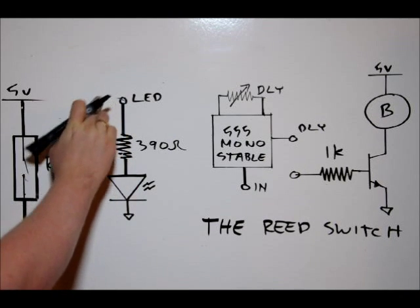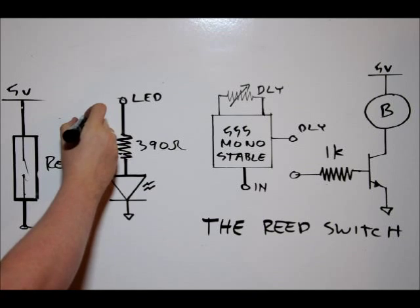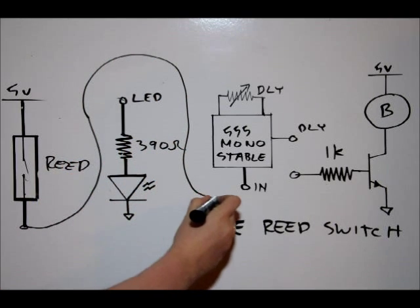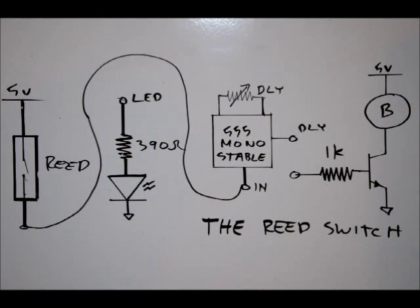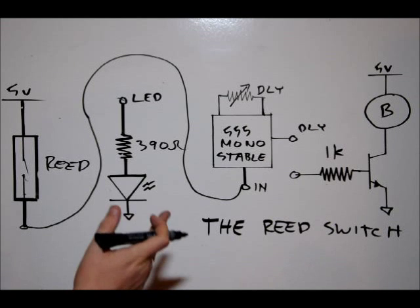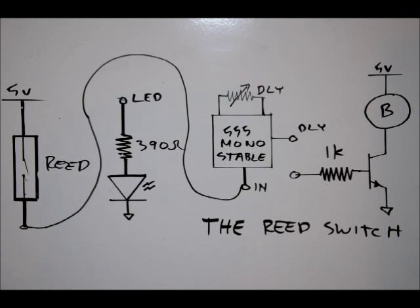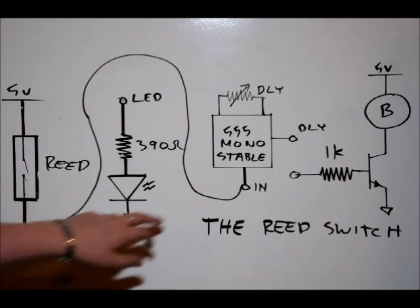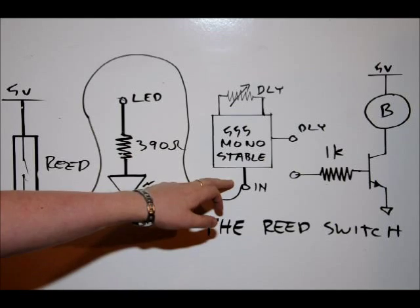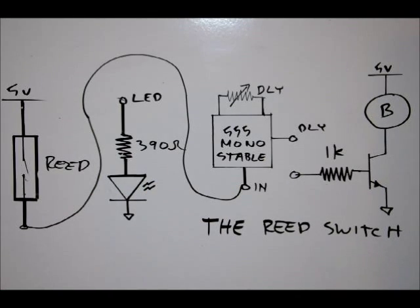We're going to connect it to the in-pin on our monostable multivibrator. We can adjust the pulse width from basically a very short couple milliseconds to 10 seconds or more. We're not going to do that. So what this does is whenever we get a positive 5-volt signal on our in-line, on our monostable multivibrator.